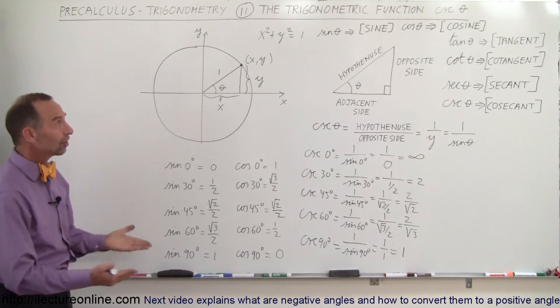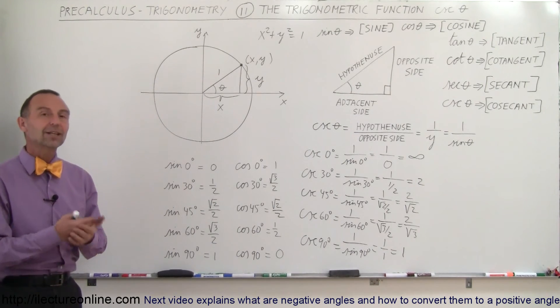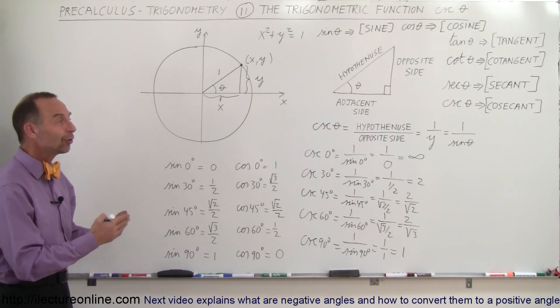So now you've been introduced to the six trigonometric functions: the sine, the cosine, the tangent, the cotangent, the secant, and the cosecant. And in the next many videos, we're going to be using those values.